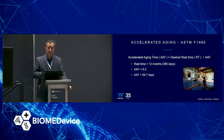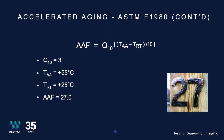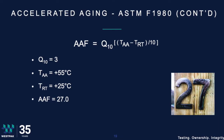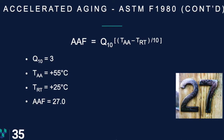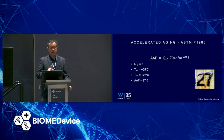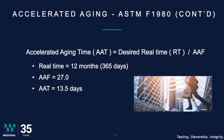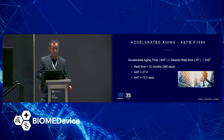I can also increase the aging temperature — from +55°C up to +60°C. With a Q10 of 3, meaning I've studied my materials and determined empirically that the number can be 3, keeping the aging temperature at 55°C and room temperature at 25°C, I get an accelerated aging factor of 27 — last time it was 8. Plugging that into the equation, I can get the accelerated aging time down to 13.5 days for a 12-month period. Changing your Q10 to 3 is very aggressive, but if it works out, you can do the aging in 13.5 days.